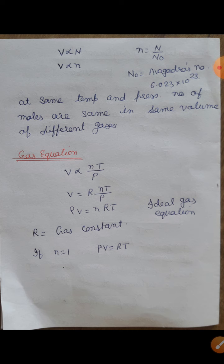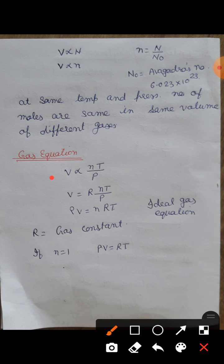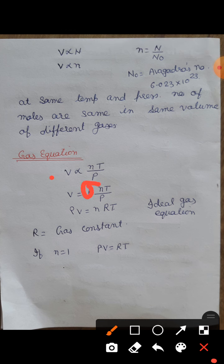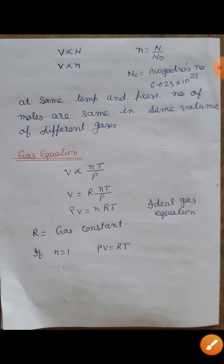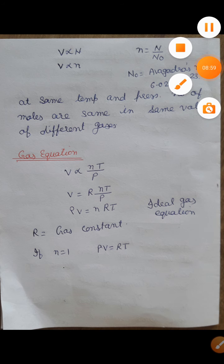इन तीनों laws को combine करते हैं - Boyle's Law, Charles' Law, और Avogadro's Law। V is directly proportional to nT/P। V is directly proportional to T (Charles' Law), V is inversely proportional to P (Boyle's Law), V is directly proportional to n (Avogadro's Law)। Proportional का sign हटाने पर एक constant R आता है, जिसे gas constant कहते हैं। तो PV = nRT, यह हमारी ideal gas equation है। P is pressure, V is volume, n is number of moles, R is the gas constant, and T is the temperature।